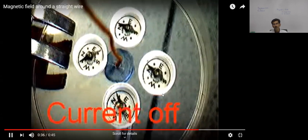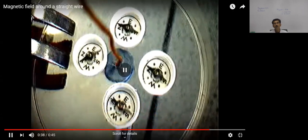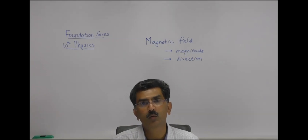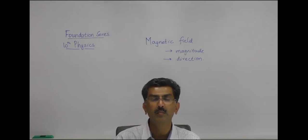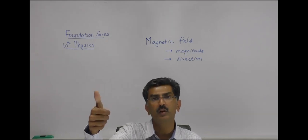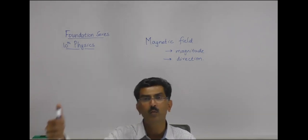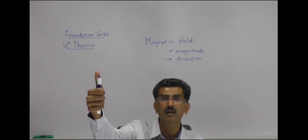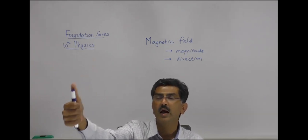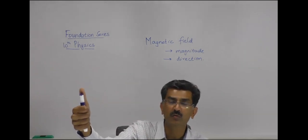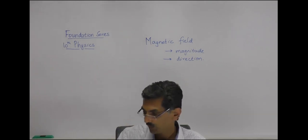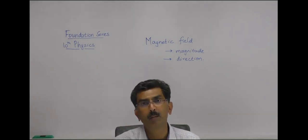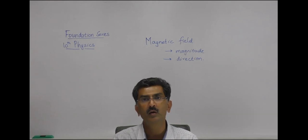This is a simple demonstration of how a straight wire carrying a current has a magnetic field around it, which can be determined by simply holding the current-carrying conductor with your right hand, having the thumb point in the direction of the current, and the remaining four fingers give you the direction of the magnetic field around the wire.